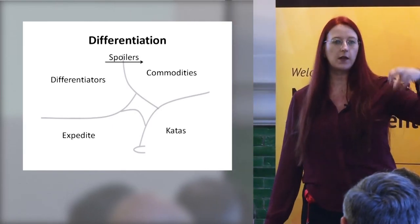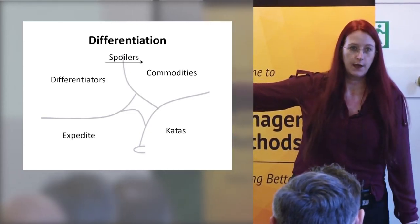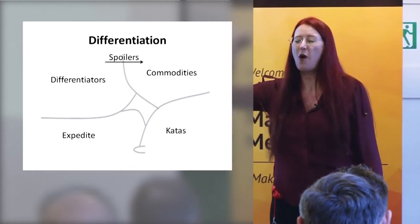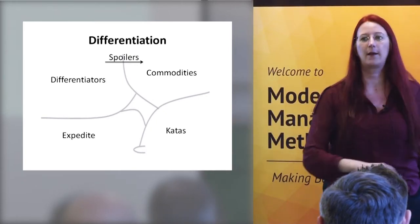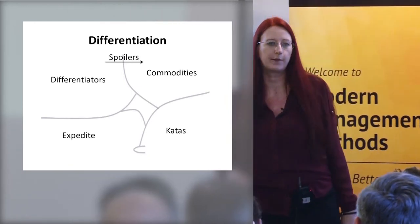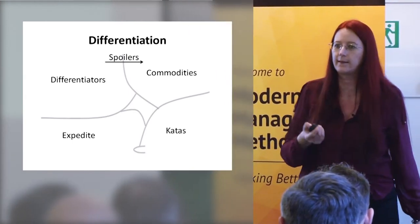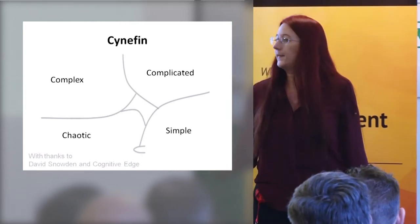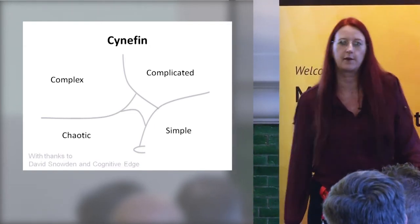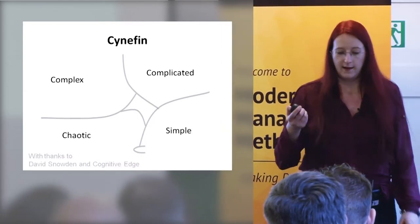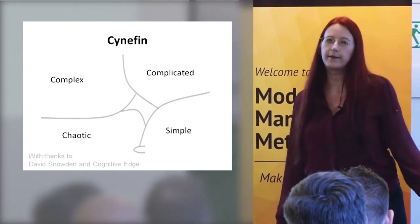I've talked about the kinds of problems — now I'm going to show you how this correlates to Cynefin. Big thanks to David Snowden and Cognitive Edge, who came up with this framework. Real Options comes from Chris Matts. Deliberate Discovery comes from Dan North. Olaf Maassen has also done a lot of work on Real Options. There's a type of problem that kids can solve — FizzBuzz, Roman numerals — things I used to program on my little BBC at age seven. They're simple, and what we do with those problems is categorise them.